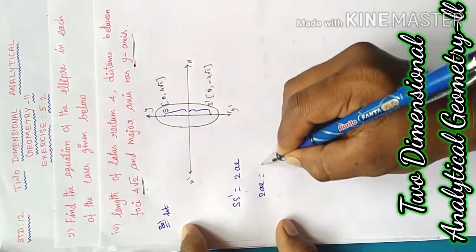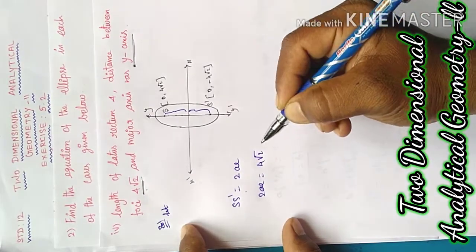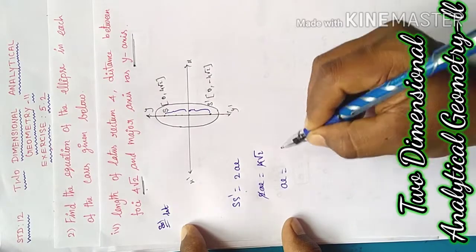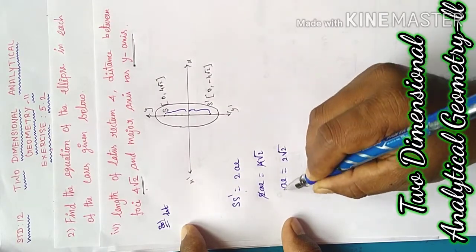From the distance between foci: 2 into a equal to 4 into root 2, therefore a equal to 2 into root 2.